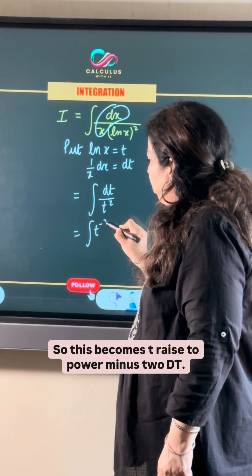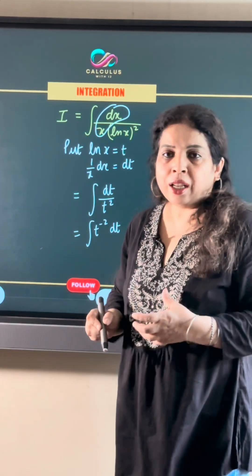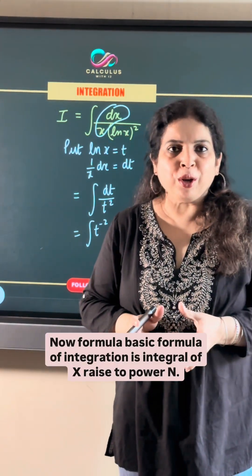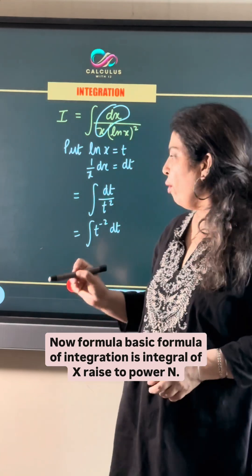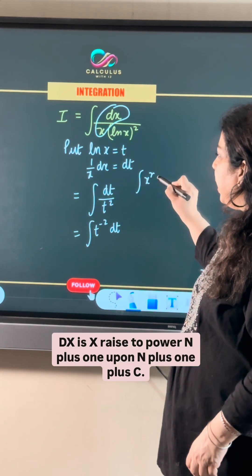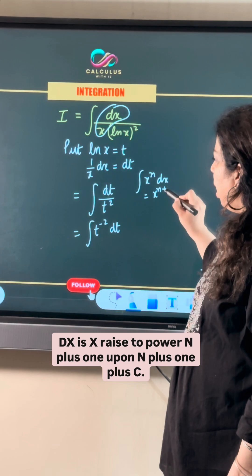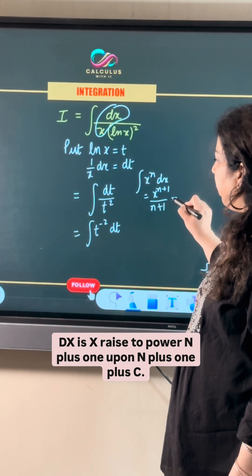So this becomes t raised to power minus 2 dt. Now the basic formula of integration is integral of x raised to power n dx is x raised to power n plus 1 upon n plus 1 plus c.